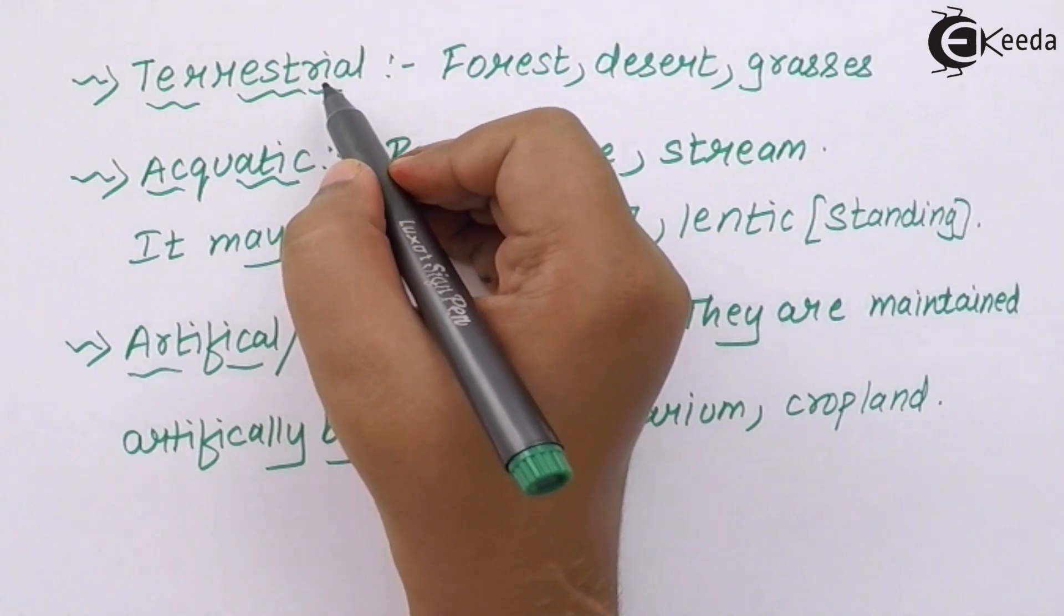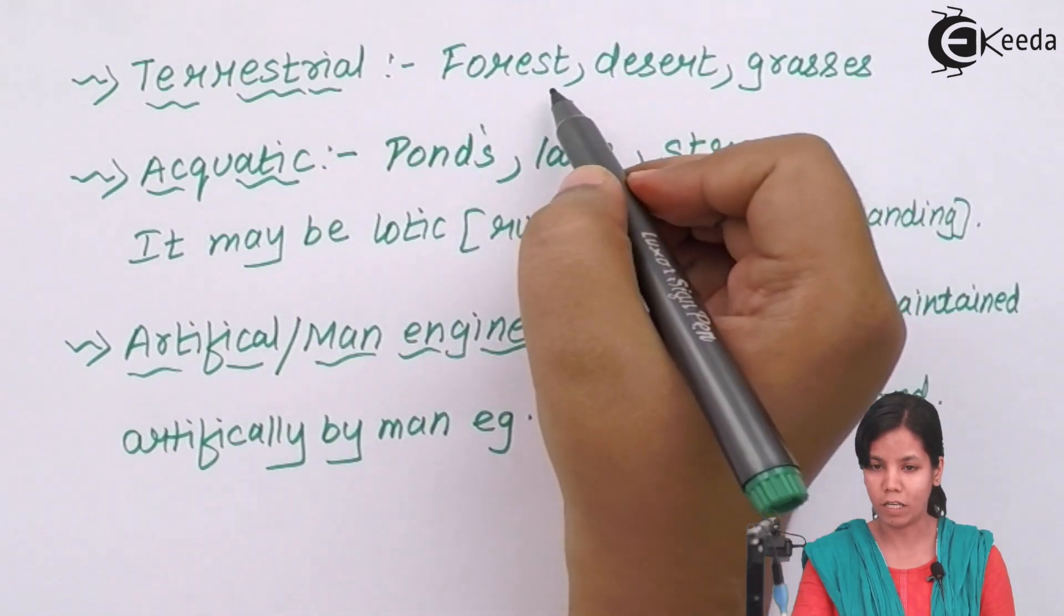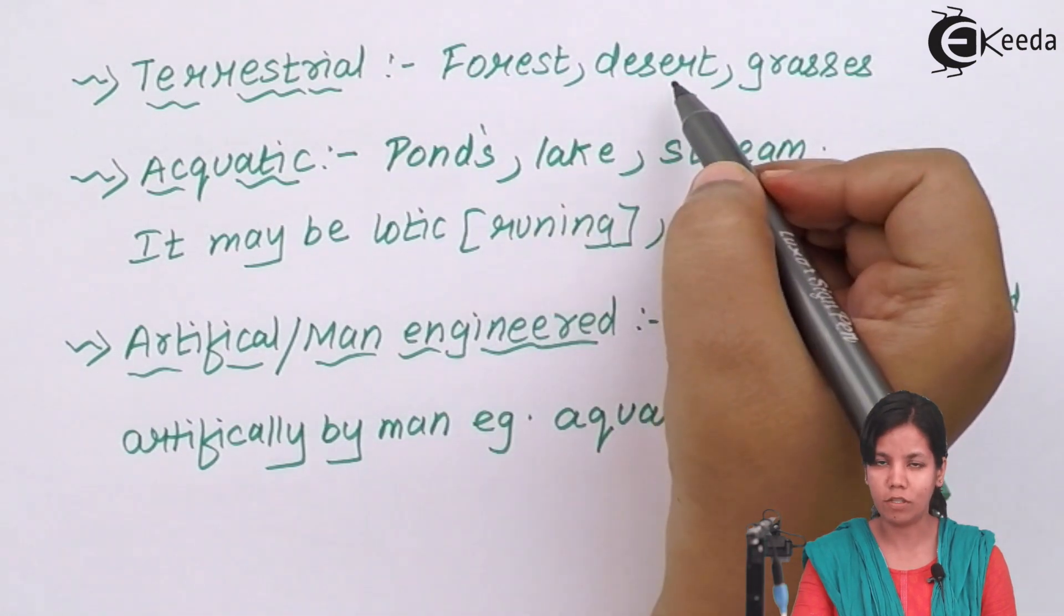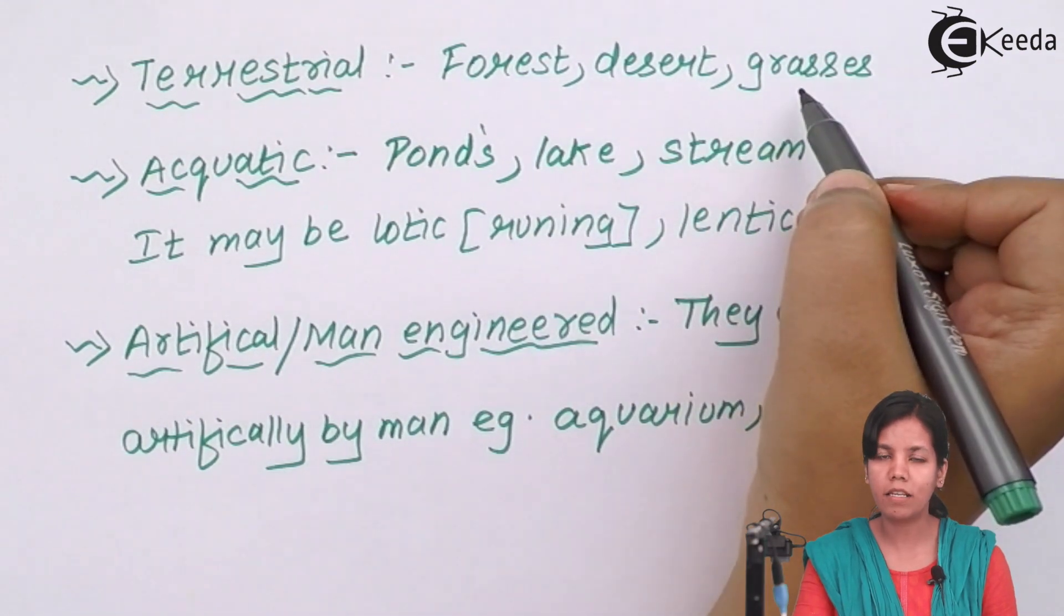Terrestrial ecosystem includes basically forest, dens, spears, any kind of forest, desertic regions and grasses, various types of grasses.